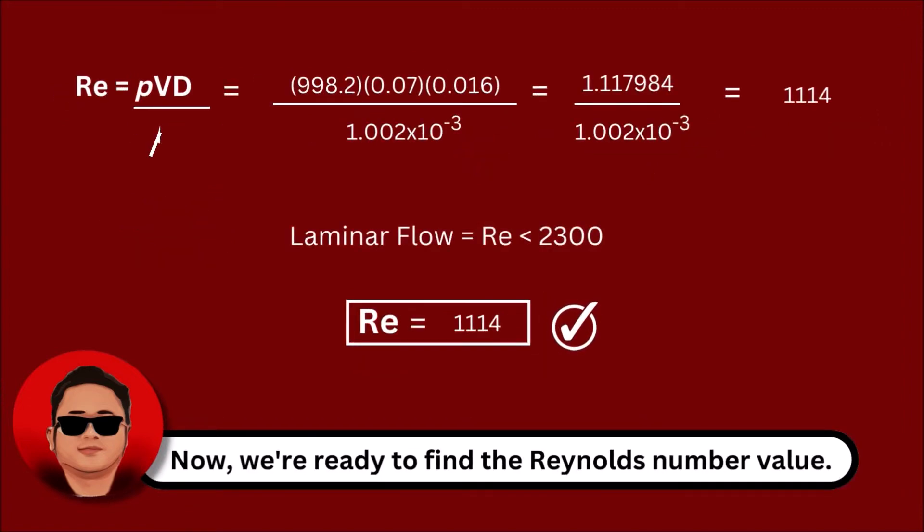Now, we are ready to find the Reynolds number by substituting all the values into the equation. So, we've got a Reynolds number of 1114. This value is less than 2300, which means this flow is laminar.